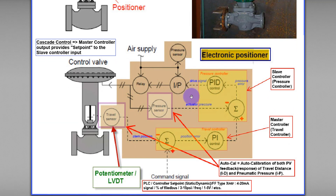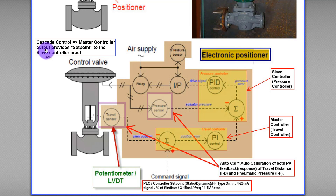Now let's talk about the positioner. There is a cascade control happening inside the positioner. Cascade control involves two controllers — one is the master controller and the other is the slave controller. The master controller output provides the set point to the slave controller input.